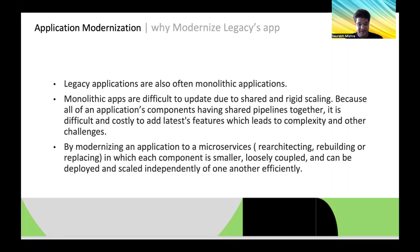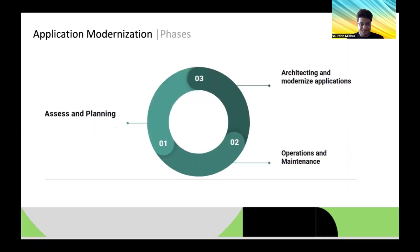There are certain ways to modernize to microservices: re-architecting, re-hosting, rebuilding, and replacing. In each approach, components become much smaller and are loosely coupled, allowing them to be deployed independently of one another. These modernization efforts are divided into three phases: assessment and planning, architecting and assembling, and operations and maintenance.